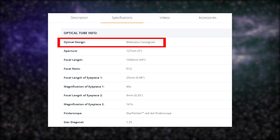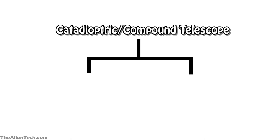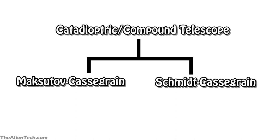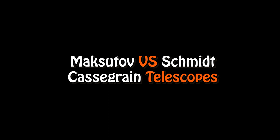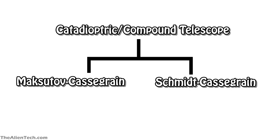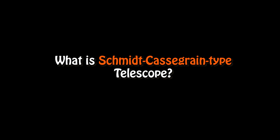Whenever you see the specifications of any telescope, it is always mentioned what type of telescope that is. If you want to know what are the different types of telescope, then you should watch this video. Out of the main three types, the compound or catadioptric telescope has many subtypes. From these subtypes, Maksutov-Cassegrain and Schmidt-Cassegrain type telescopes are terms often used. Today we will see what exactly these two types of telescopes are and how they differ from each other. Both of these types fall under the category of compound or catadioptric telescopes.